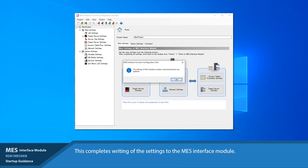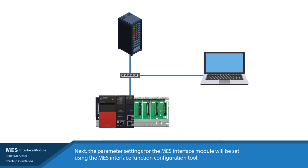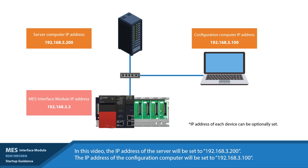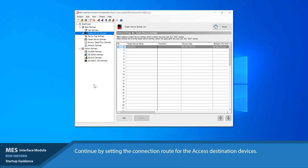Next, the parameter settings for the MES interface module will be set using the MES interface function configuration tool. Along with performing network settings, connect the MES interface module, server, and configuration computer to the network. In this video, the IP address of the server will be set to 192.168.3.200, and the IP address of the configuration computer will be set to 192.168.3.100. Continue by setting the connection route for the access destination devices. In the Edit Item tree, select Target Device Settings. The default settings will be used for this example.